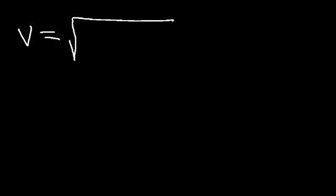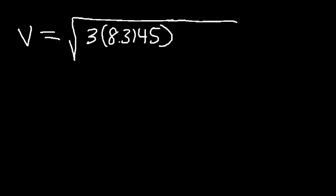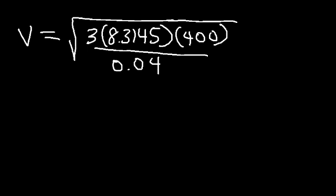Now let's plug in the values that we have. R is going to be 8.3145, the temperature is 400 Kelvin, and the molar mass is 0.04. So let's see if we can solve this.